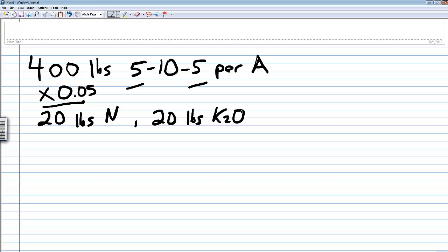So every time we would apply 400 pounds of 5-10-5 per acre, we would be delivering 40 pounds of P2O5 (which was our target), 20 pounds of K2O, and 20 pounds of nitrogen.